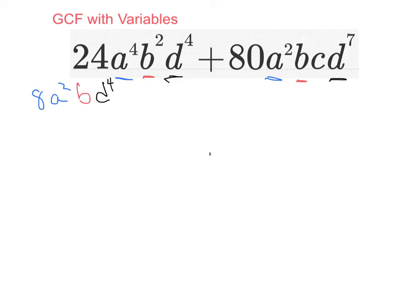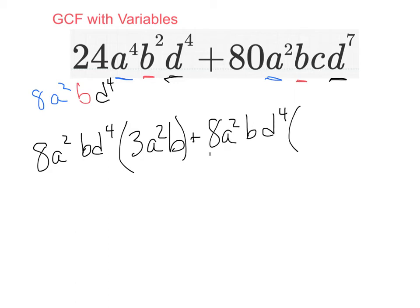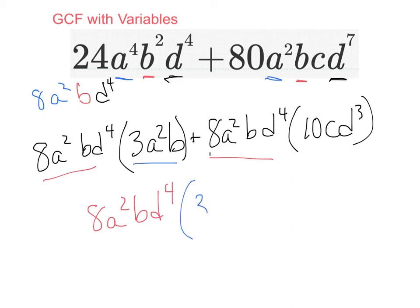So 24a to the fourth b squared d to the fourth plus 80a squared b c d to the seventh becomes 8a squared b d to the fourth times 3a squared b plus 8a squared b d to the fourth times 10c d to the third. So in the end, it's 8a squared b d to the fourth, bracket 3a squared b plus 10c d to the third, close parentheses.